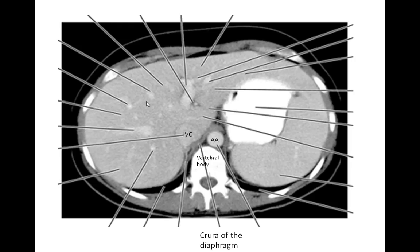The next layer of structures to look for is the retroperitoneal organs. However, we can't really see the retroperitoneal organs at this stage because the section is quite high. So we turn our attention to the intraperitoneal organs. Remember, within the upper part of the abdomen from front to back, the liver lies in front of the stomach, which lies in front of the spleen.